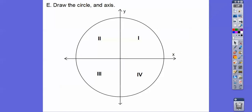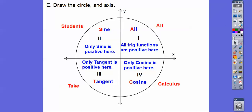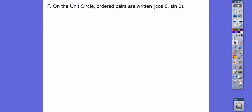Let's go ahead and draw that circle. All functions — sine, cosine, and tangent — are all positive in the first quadrant. Only the sine functions are positive in the second. Only the tangent functions are positive in the third. Only the cosine functions are positive in the fourth. Here's a gimmick: 'All students take calculus' — that helps me remember which sign is positive. On a unit circle, our ordered pairs are always written as cosine, comma, sine — just like x, y is in alphabetical order. C comes before S in the alphabet.